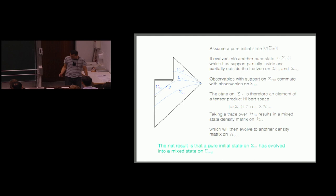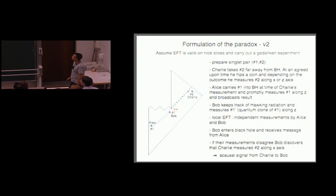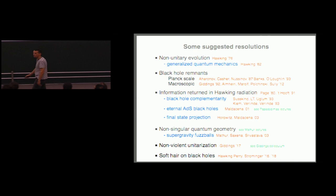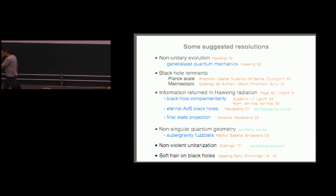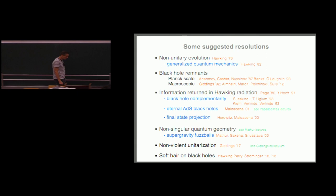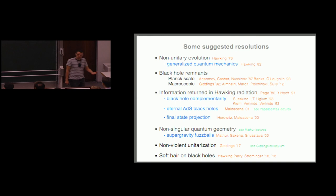Let's think about the logical possibilities. Hawking concluded that you just have to take this at face value: once gravitational effects are taken into account, quantum evolution simply isn't unitary. That's called information loss — his proposal. He didn't just throw up his hands; he said we'll have to modify how we do quantum theory. He did more than just say this — we'll say a little more about that.